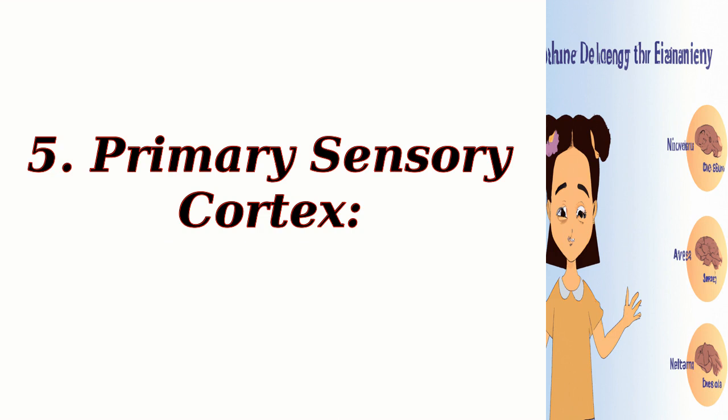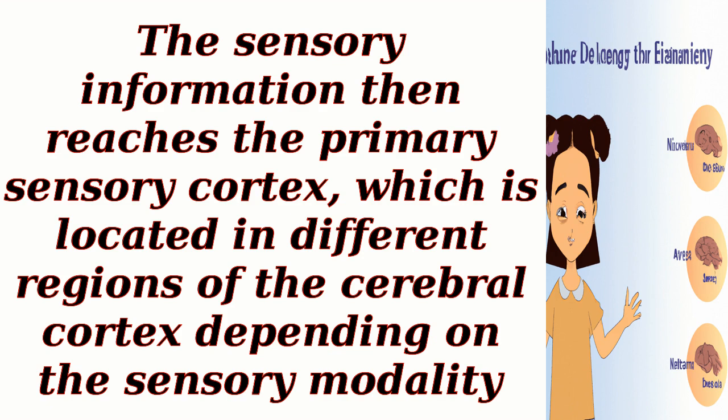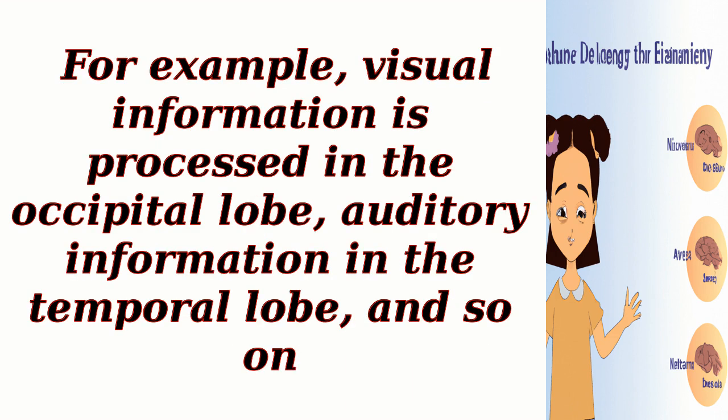5. Primary Sensory Cortex. The sensory information then reaches the primary sensory cortex, which is located in different regions of the cerebral cortex depending on the sensory modality. For example, visual information is processed in the occipital lobe, auditory information in the temporal lobe, and so on.